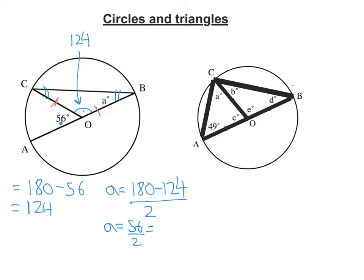So that's going to be 56 over 2, which if I do that, 2 into 5 goes twice with one left over, is 28 degrees. So A is 28 degrees.